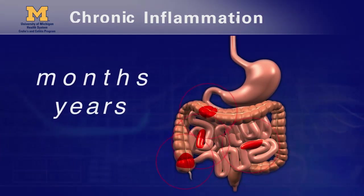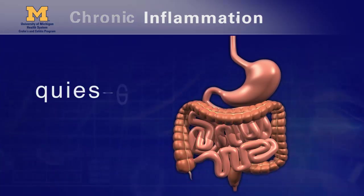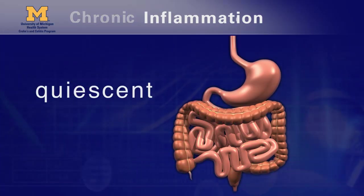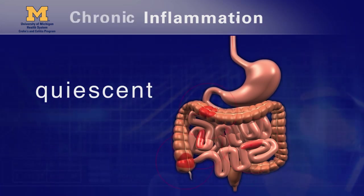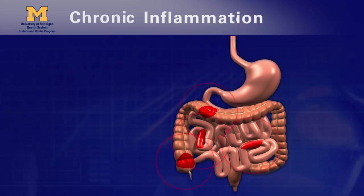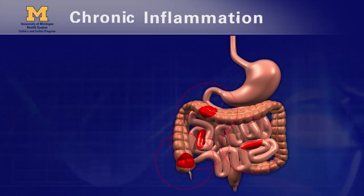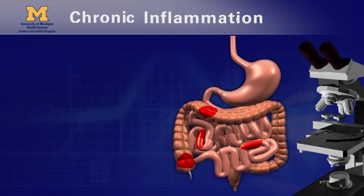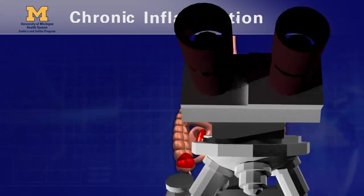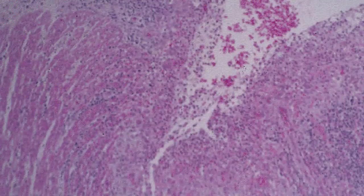The inflammation can quiet down or become quiescent for a while, but weeks, months, or years later, the inflammation can come back with a big flare of activity and symptoms. It is also chronic because the damage or distortion of the intestine lining is left behind when the intestine heals after a flare and can still be seen under a microscope.